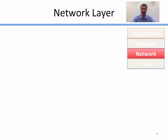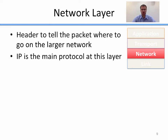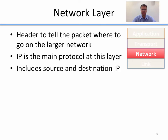The next layer is the network layer — a header to tell the packet where to go on the larger network. The link layer is for the local network; the network layer is for the larger network, or the Internet. IP is the main protocol used here; there are a few others, but they really aren't used anymore. The network layer includes the source and destination IP address, and it's used to route packets ultimately to their destination on the Internet.